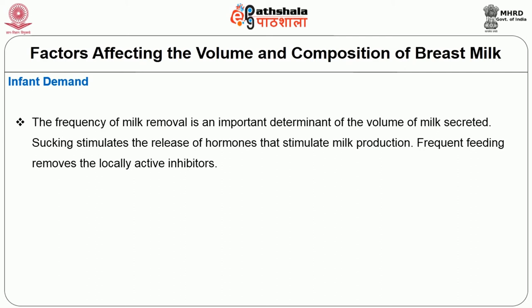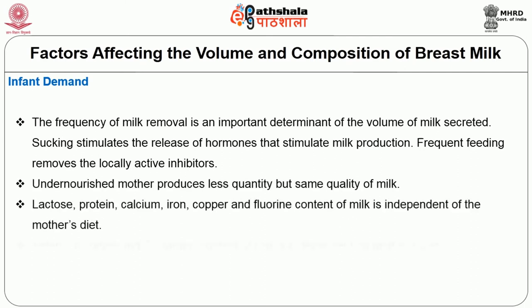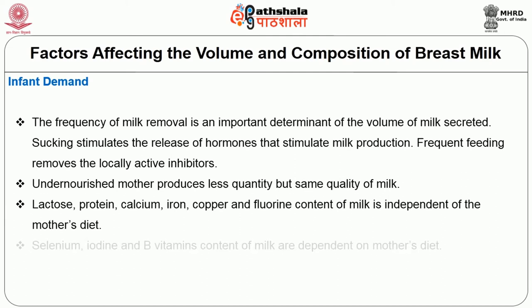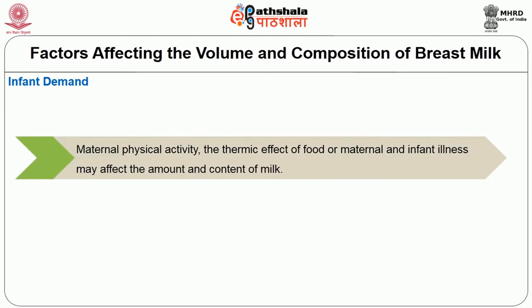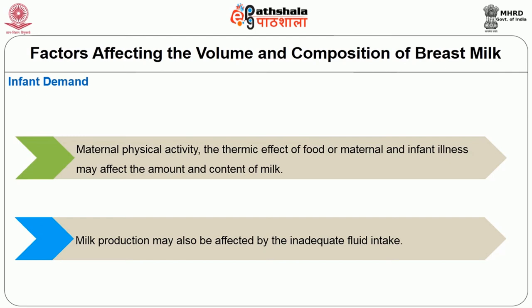An undernourished mother produces less quantity of milk but the same quality. Selenium, iodine, and B vitamins content of milk are dependent on the mother's diet, so the mother should take a diet rich in these nutrients. However, lactose, protein, calcium, iron, copper, and fluorine content of milk are not dependent on the mother's diet. Lactation capacity is a function of genetic heritage. Maternal physical activity, the thermic effect of food, and maternal and infant illness may also affect the amount and content of milk. Milk production may also be affected by inadequate fluid intake, so the lactating mother should take enough fluids to enhance milk secretion.